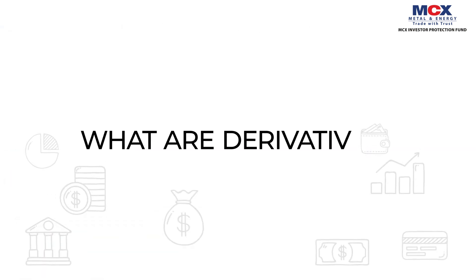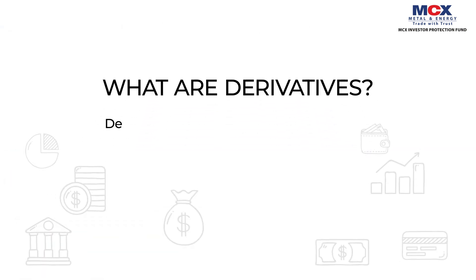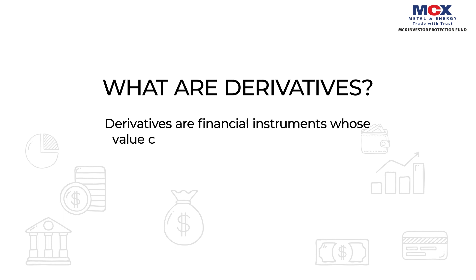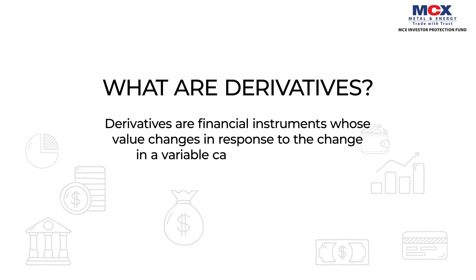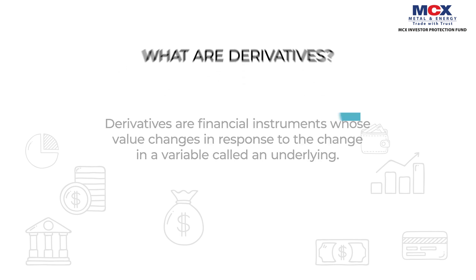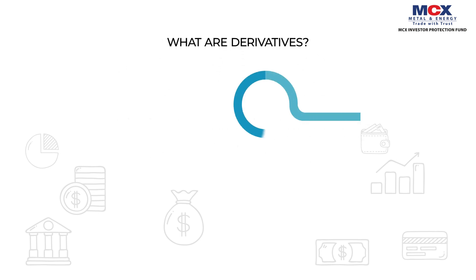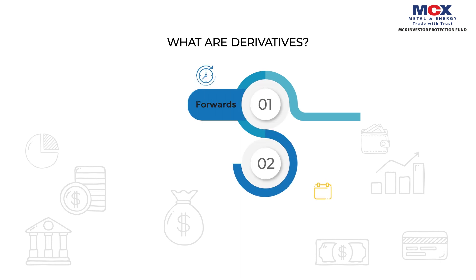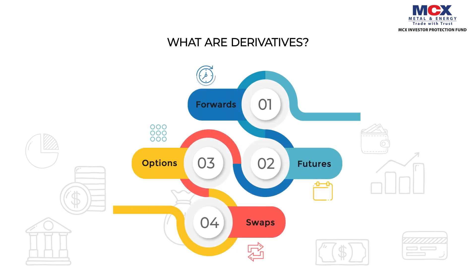What are derivatives? Derivatives are financial instruments whose value changes in response to the change in a variable called the underlying. The different types of derivative financial instruments are forwards, futures, options, and swaps.